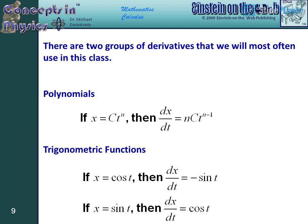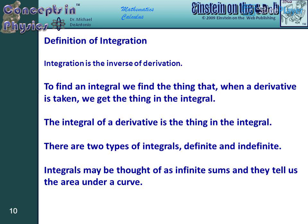Definition of Integration. Integration is the inverse of derivation. To find an integral we find the thing that, when a derivative is taken, we get the thing in the integral. The integral of a derivative is the thing in the integral. There are two types of integrals, definite and indefinite. Integrals may be thought of as infinite sums and they tell us the area under a curve.